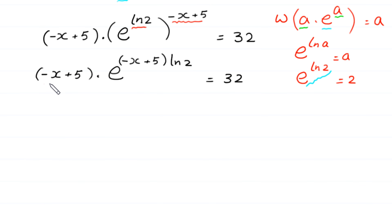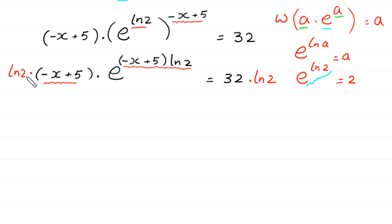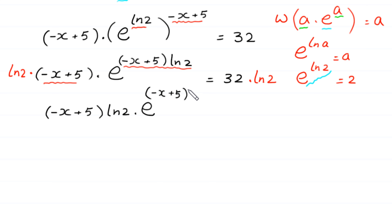Now here we have negative x plus 5 and here we have negative x plus 5 times ln of 2. So to make negative x plus 5 match negative x plus 5 times ln of 2, we multiply both sides of this equation by ln of 2. At the left side, we multiply by ln of 2, giving: negative x plus 5 times ln of 2 times e to the power negative x plus 5 times ln of 2 is equal to 32 times ln of 2.